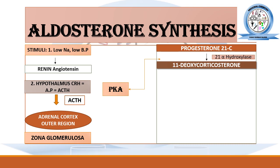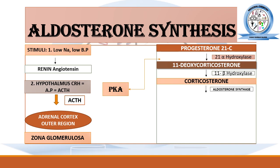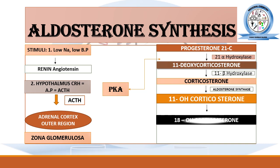In the next step, 11-beta-hydroxylase enzyme acts on 11-deoxycorticosterone and converts it into corticosterone. This corticosterone is again acted upon by 11-beta-hydroxylase, which is also known as aldosterone synthase enzyme because it is involved in the biosynthesis of aldosterone. Corticosterone is then converted into 11-hydroxycorticosterone.